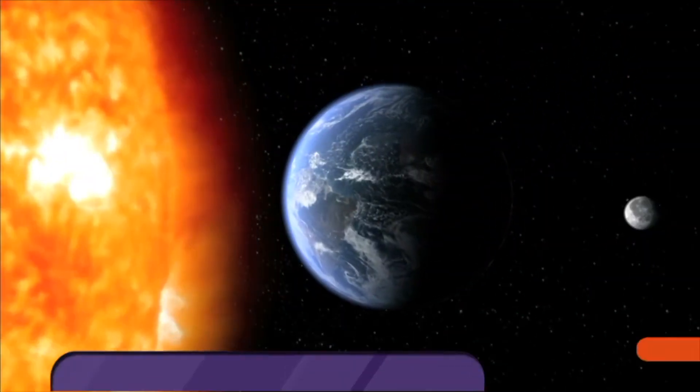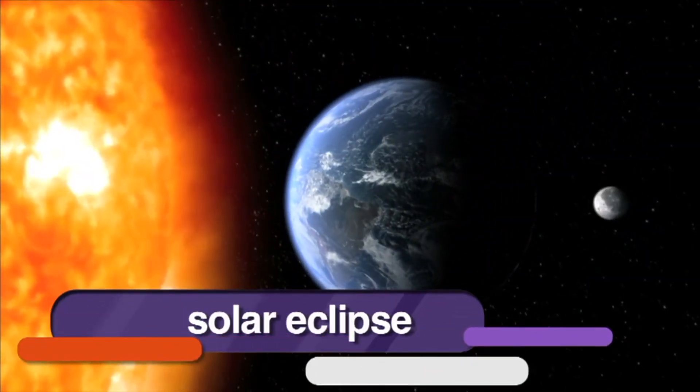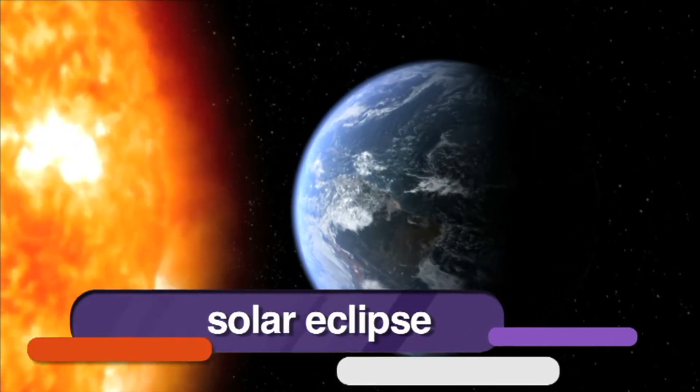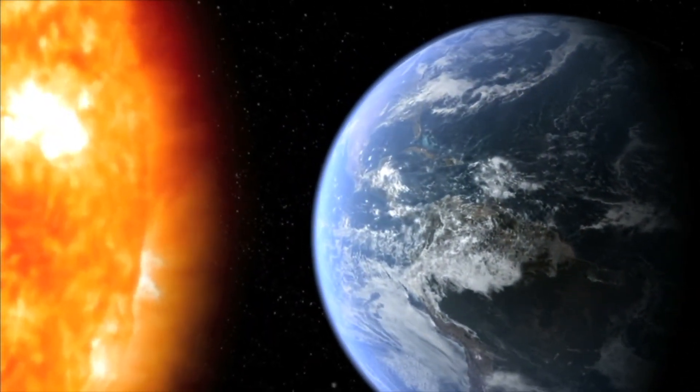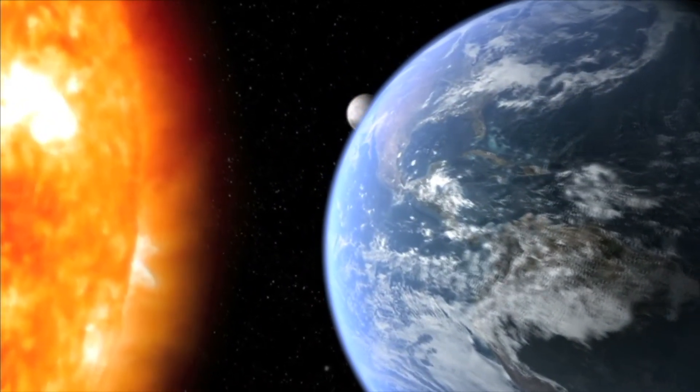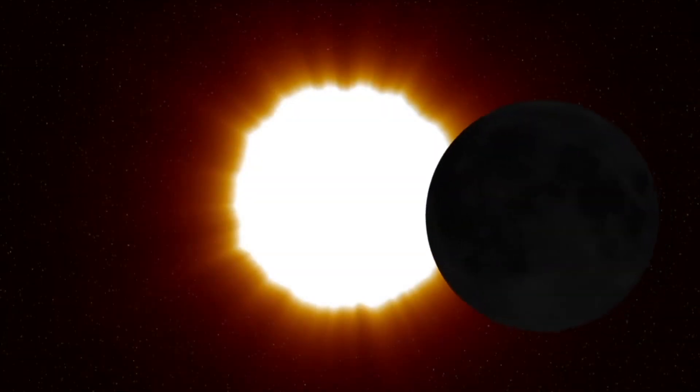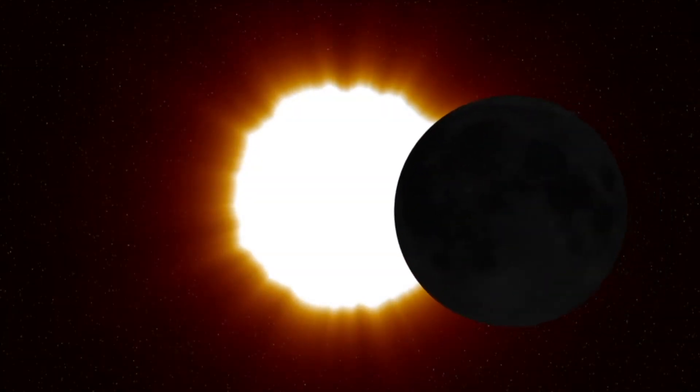The Earth rotates on its axis and revolves around the sun. The moon also revolves around the Earth, so every few years a solar eclipse happens. A solar eclipse is when the path of the moon revolving around the Earth goes directly in front of the sun, causing the sun's light to be blocked from Earth.